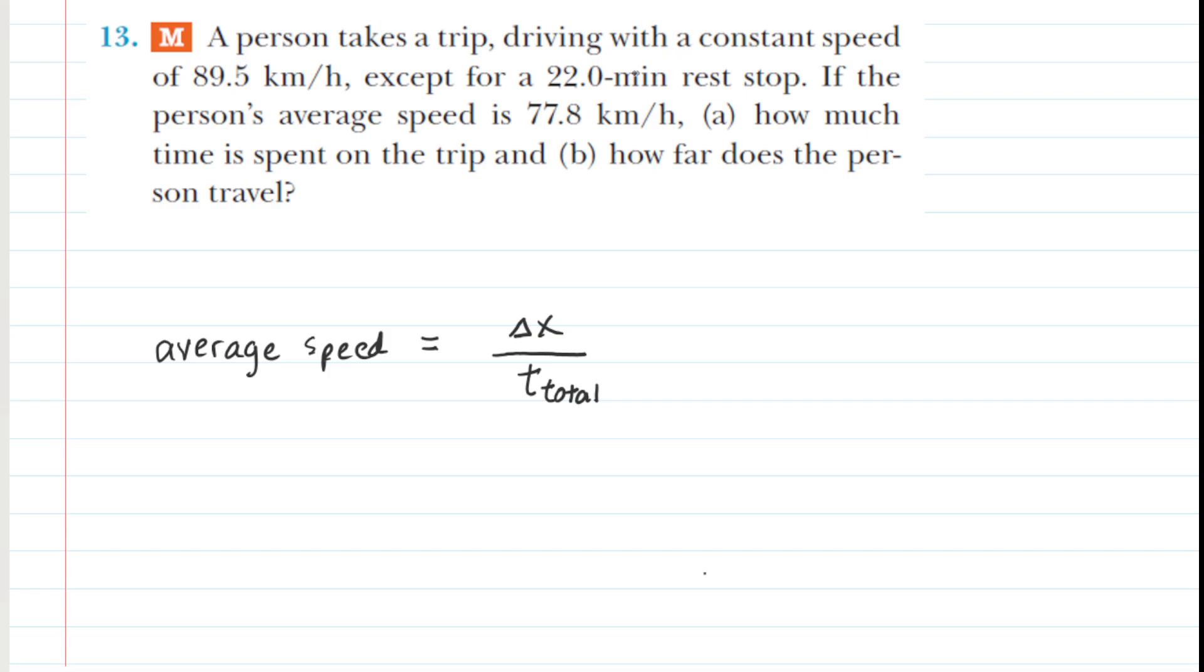Now on to the solution. If you need to pause the video and read the problem to yourself to get reacquainted with it, please go ahead and do so. We know that the equation for average speed is equal to a distance which we have symbolized by delta x divided by the total amount of time traveled.